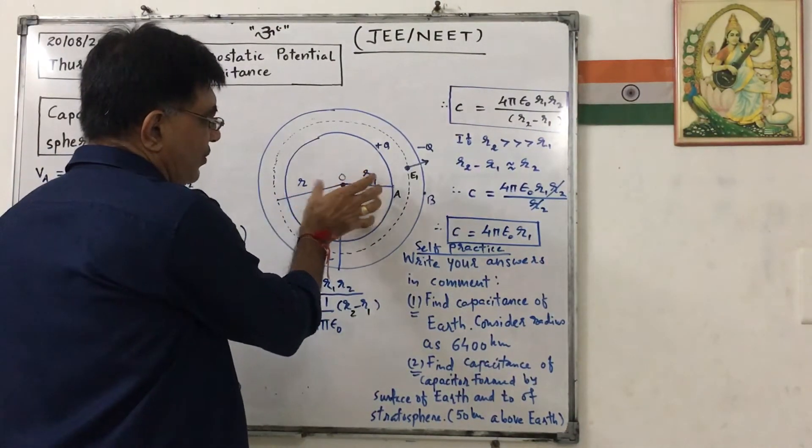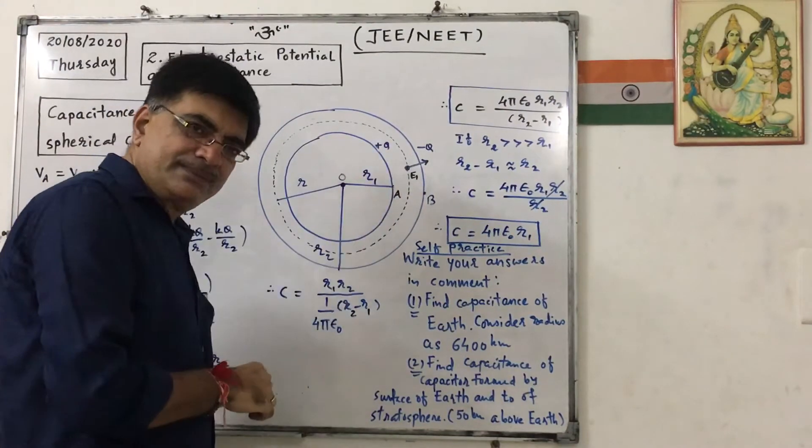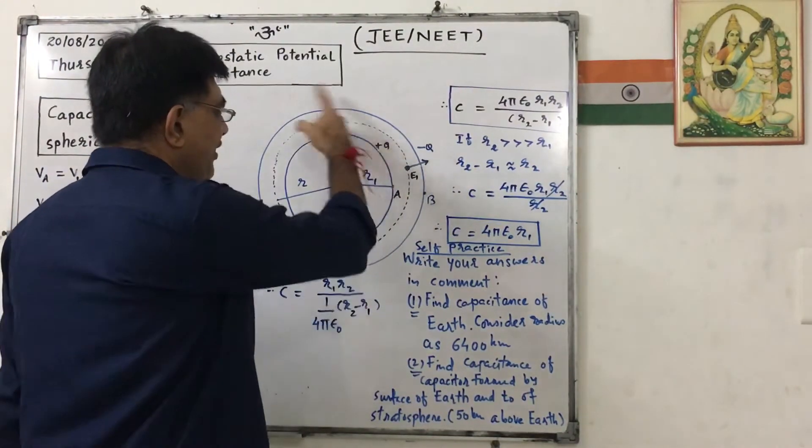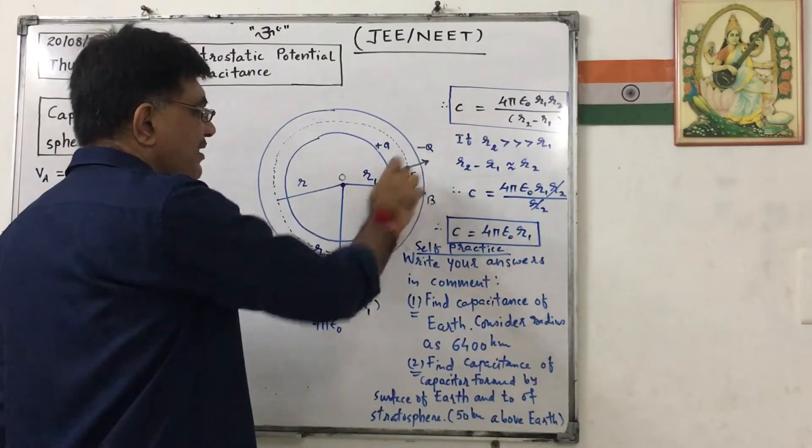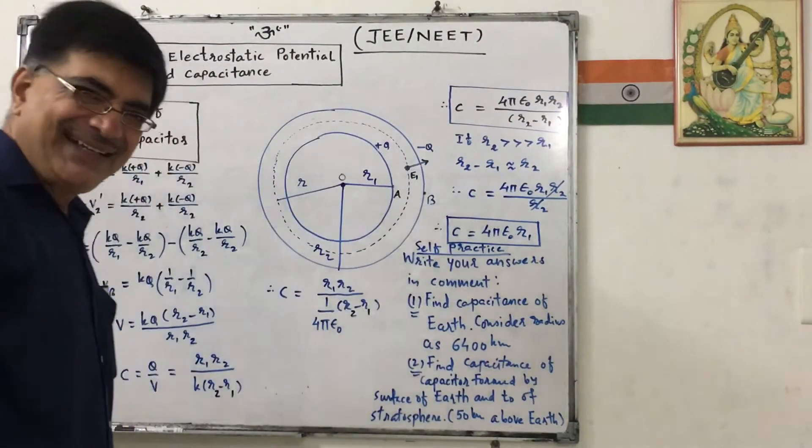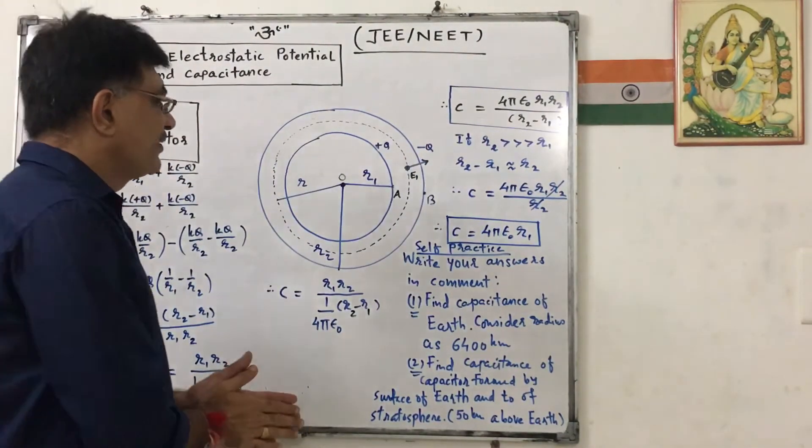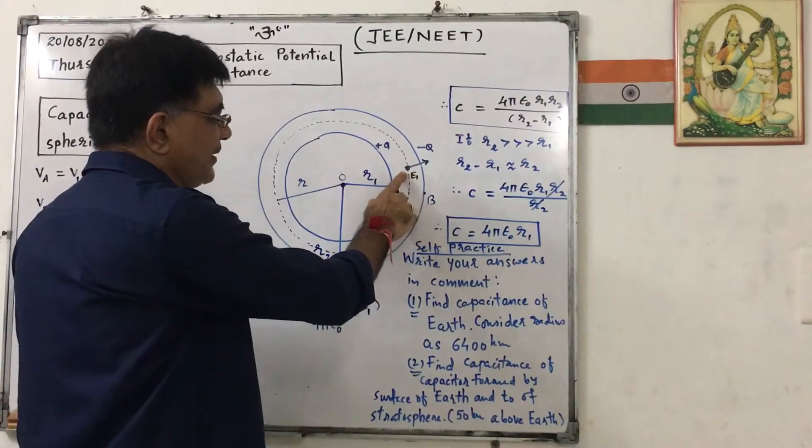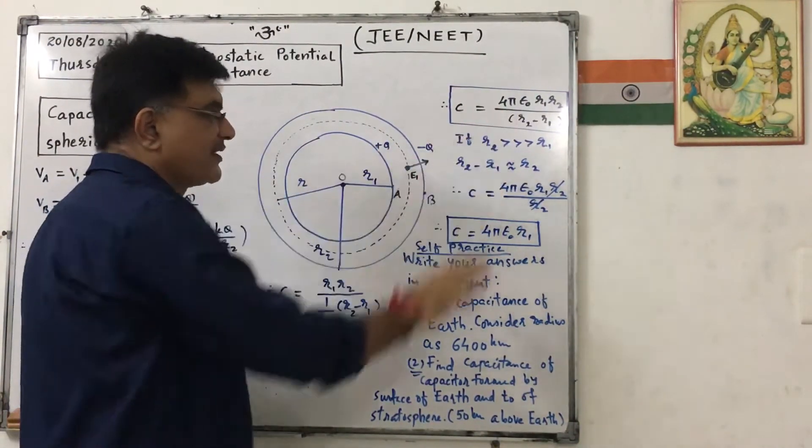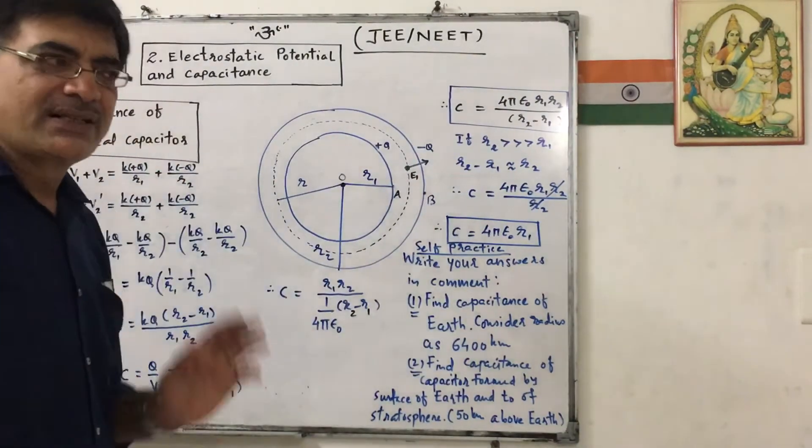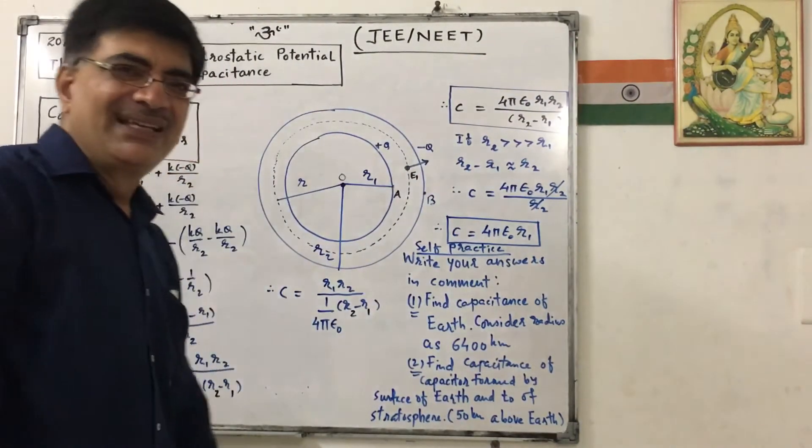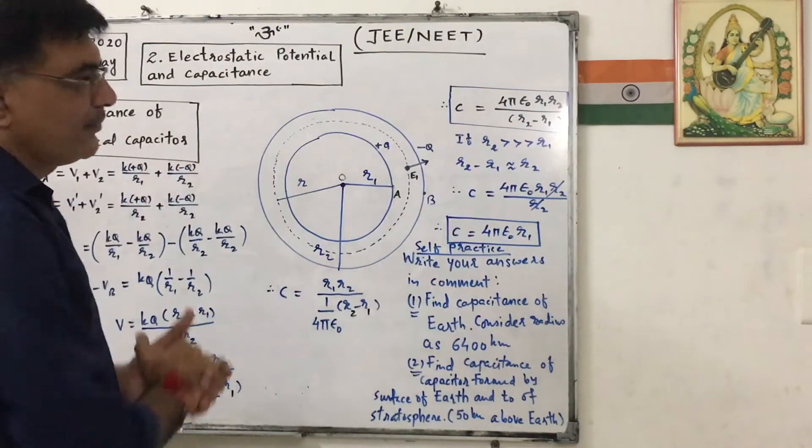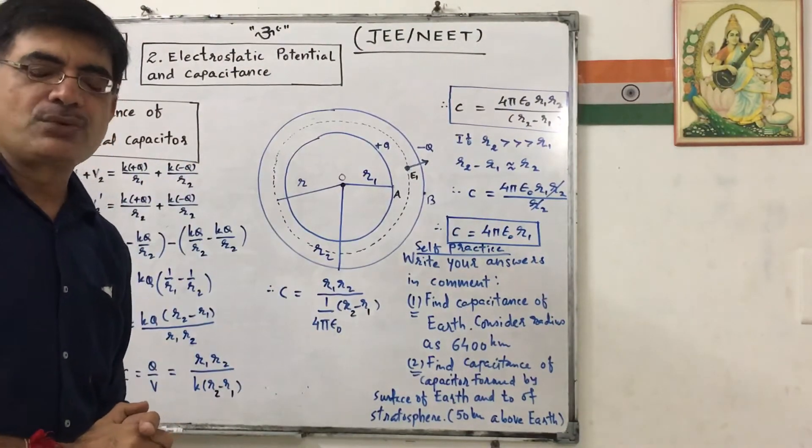One shell of radius R1 having charge positive Q, other shell of radius small R2 having charge minus Q. So if I consider any point here and if I imagine a positive unit charge here, this will offer repulsive force, so electric field is outward. Now, these two shells are forming a capacitor and we have to find out capacitance.